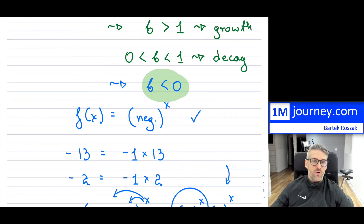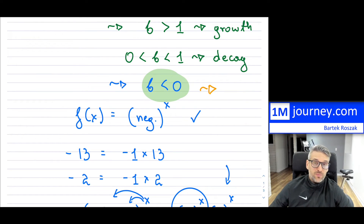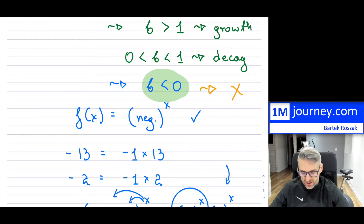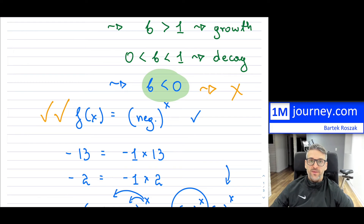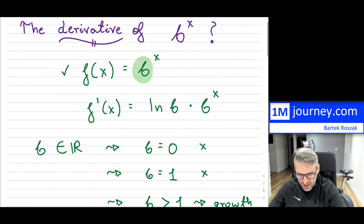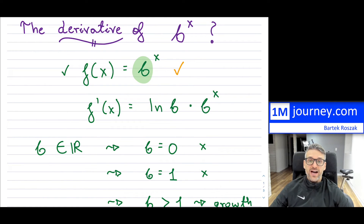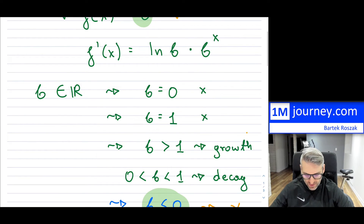Teachers never really talk about this — maybe they forget, or don't understand why we don't do it. We can't have our base less than zero if we want it as a function. But if the base is positive — aside from being 1, which is just a constant — then it's fair game. We can always raise a positive base to any exponent, rational, irrational, or whatever, and it exists. We can plot it out, as we saw in exponential growth and decay.